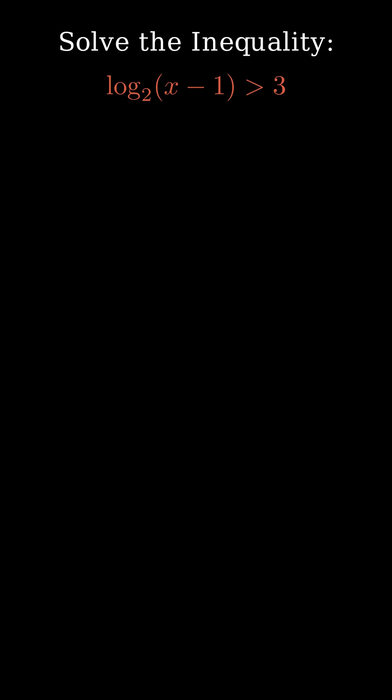We are given a logarithmic inequality: log base 2 of x minus 1 is greater than 3. To solve a logarithmic inequality, we rewrite it in exponential form. Here's the general rule: log base b of a greater than c means a is greater than b raised to the power c.